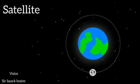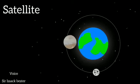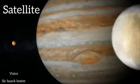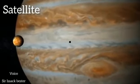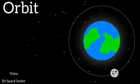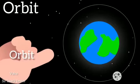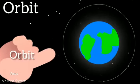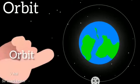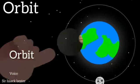A celestial body which revolves around a planet in a particular orbit is called a satellite. The moon is a satellite of the earth. Jupiter has 12 satellites — 12 moons! What do you mean by orbit? The particular and definite elliptical path in which a planet or satellite always remains is called the orbit of that planet or satellite — the path by which it revolves around the planet or the sun.